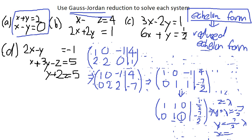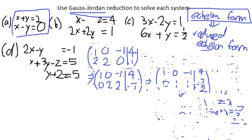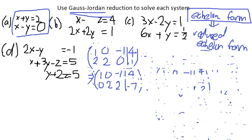This reduction method is good for determining whether solutions are definite, infinitely many, or no solution at all. Now let's take a look at the next two examples to see whether the system has no solutions, infinitely many solutions, or a unique solution.